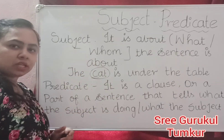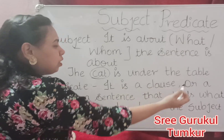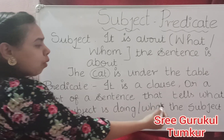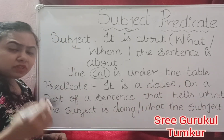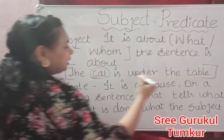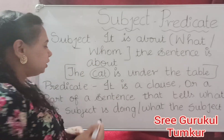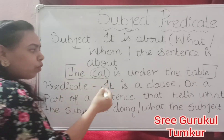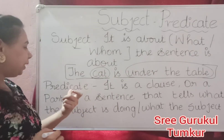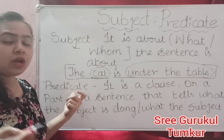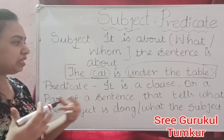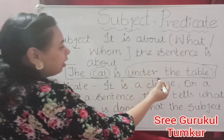Then, what is predicate? Predicate means it is a clause or a part of a sentence that tells what the subject is doing or what the subject is. Taking the same example: 'The cat is under the table.' We know the cat is the subject. Then what is it doing? It is under the table. So 'under the table' is the predicate. When we are describing or saying what the subject is doing, that is called the predicate.